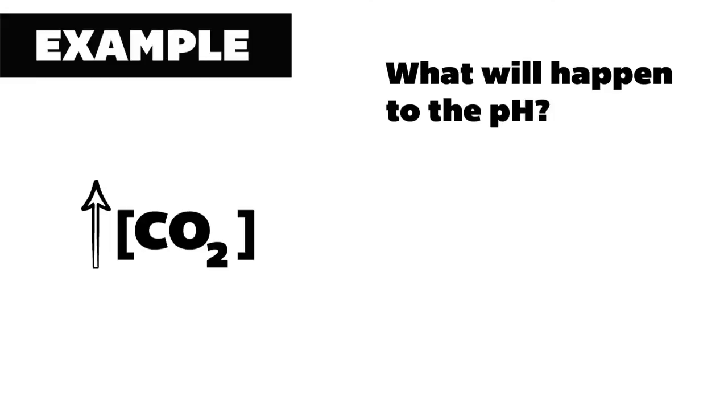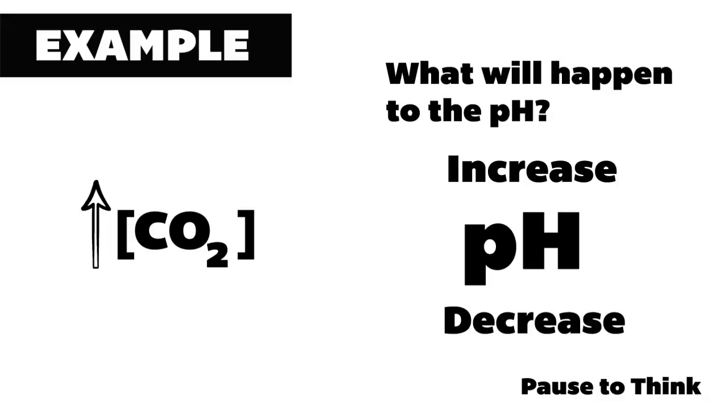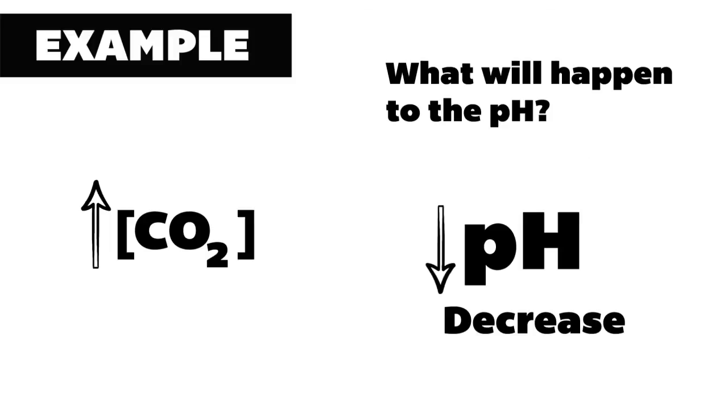Alright, so let's do another example. Let's say a person stops breathing and the concentration of carbon dioxide increases in their blood. What will happen to this person's overall pH? In this case, because the concentrations of carbon dioxide increase, there will be a decrease in overall pH.